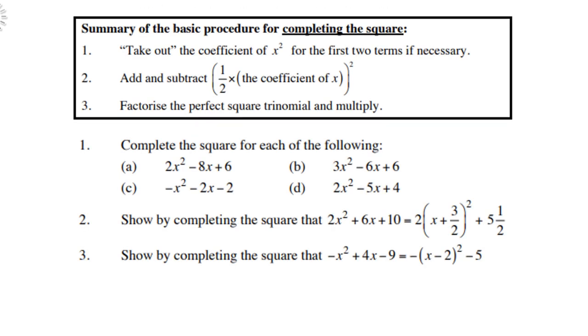Summary of the basic procedure for completing the square: Number 1, take out the coefficient of x² for the first two terms if necessary. Add and subtract a half times the coefficient of x, all squared. And third, factorize the perfect square trinomial and multiply.